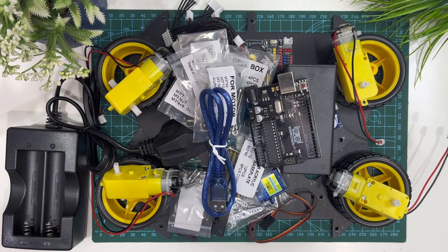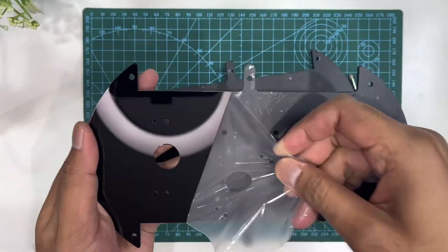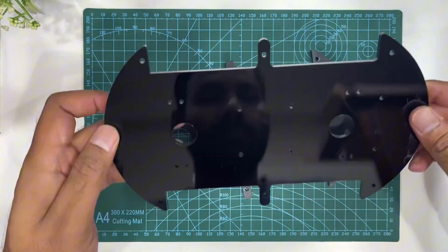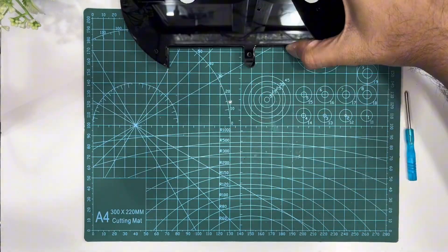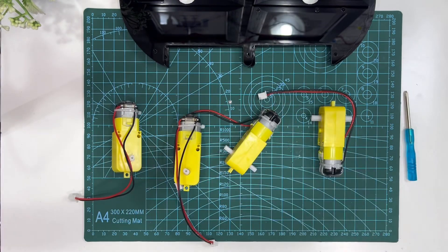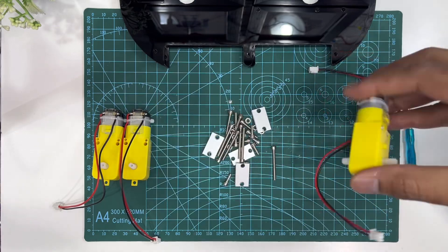We have all the components of the smart robot car, so let's get started. Remove the protective film before assembling. First we will assemble the motors. Let's take the motors and open the four motor bags and lay out components.